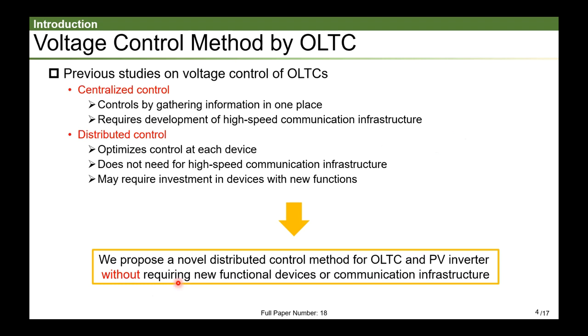So, what kind of research has been done on voltage control by using OLTC? Previous researches can be divided into two main types. The first one is centralized control. In centralized control, the major information is collected in one place, and multiple systems are controlled together. This requires the development of a high-speed communication infrastructure.